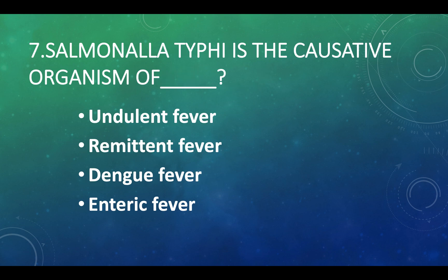Salmonella typhi is the causative organism of: Option A — undulant fever, Option B — remittent fever, Option C — dengue fever, Option D — enteric fever. Answer: Option D, enteric fever.